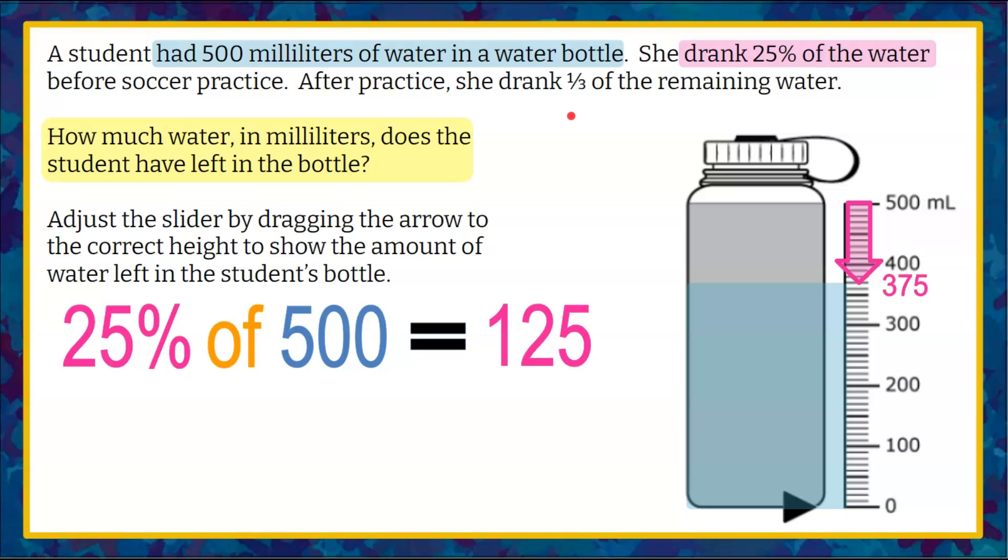Now the second thing that happened is after her practice, she drank one third of the remaining water. The remaining water is 375 milliliters. So we want to find one third of the 375.